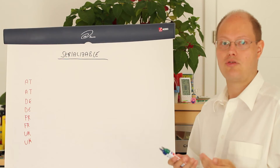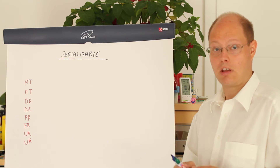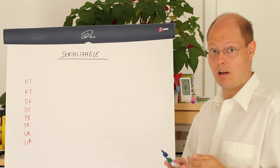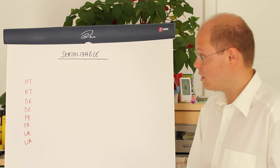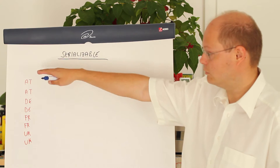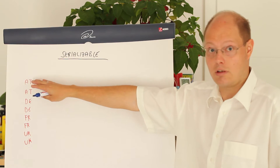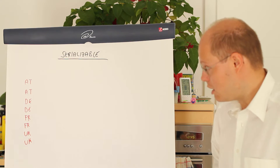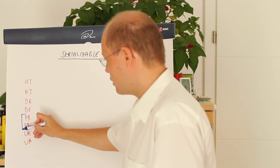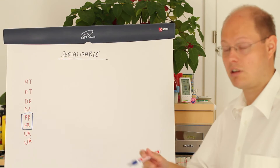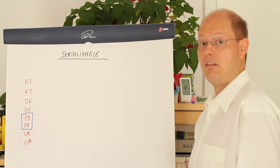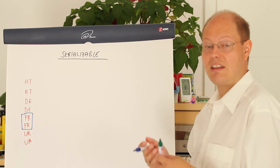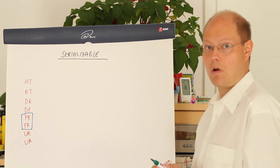Let's talk now about the transaction isolation level serializable. As I've already mentioned, serializable means that SQL Server prevents so-called phantom records. Imagine we have a table with some customers and a column describing which country a specific customer is placed in. If we want to read our customers from France, we have two records, and in the isolation level serializable SQL Server must make sure that that range of records remains stable so that no other phantom records can appear.